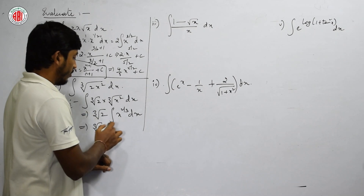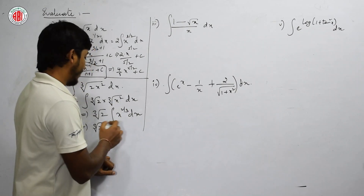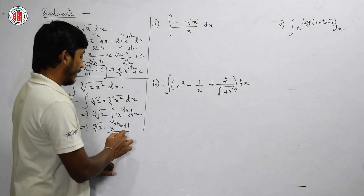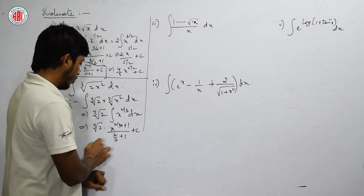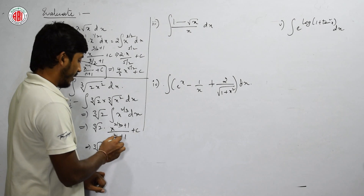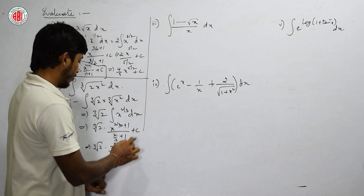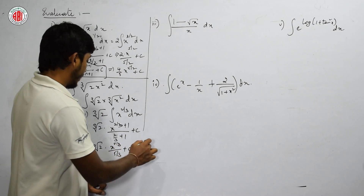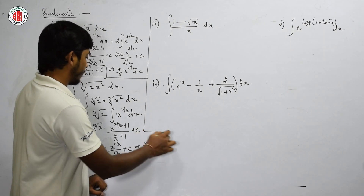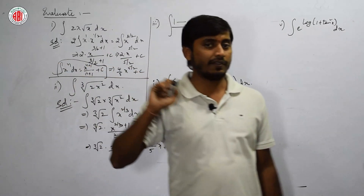That is ∛2 · ∫x^(2/3) dx. The formula for x^n is x^(n+1)/(n+1). So this will be ∛2 · x^(5/3) / (5/3). The answer will be 3∛2/5 · x^(5/3) + c. The formula used is again the x^n formula.